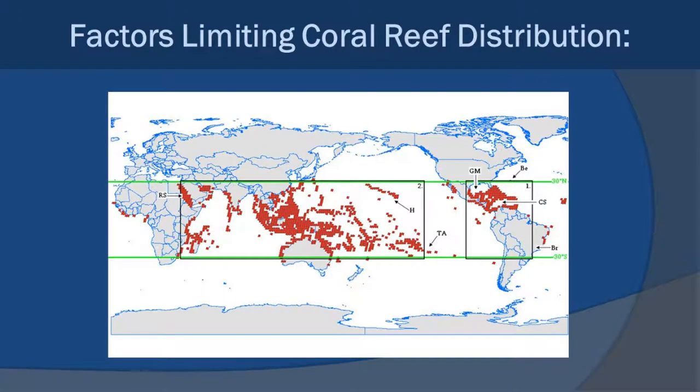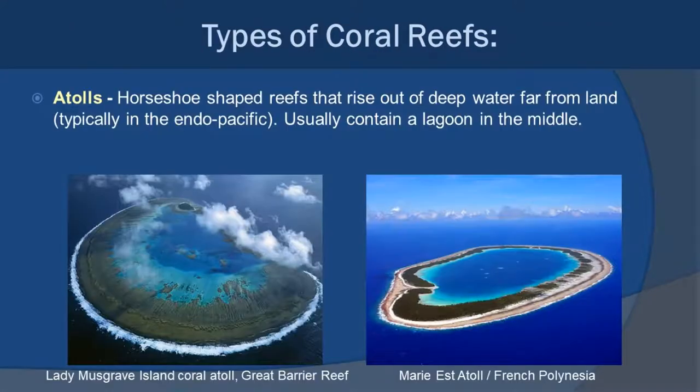If you take all these factors and apply them globally, the diagram shows all the coral reefs around the world as red dots, and you'll notice they generally occur in the tropics, in areas with nutrient-poor, clear water. Now, there are various types of coral reefs. Atolls are horseshoe or ring-shaped reefs, found a lot in the Pacific — these tropical, spectacular-looking islands. They have a very specific formation pattern.